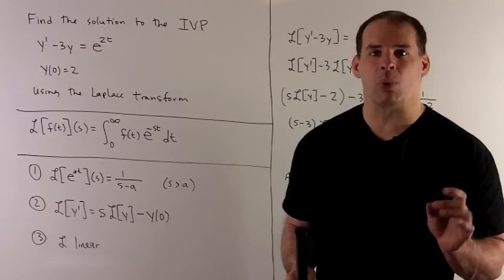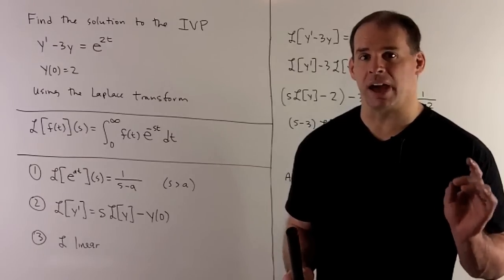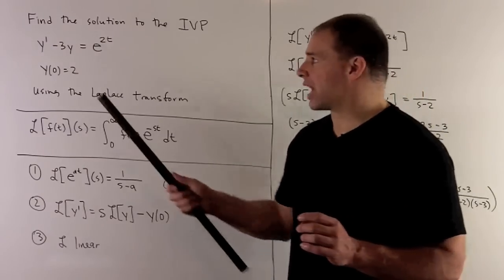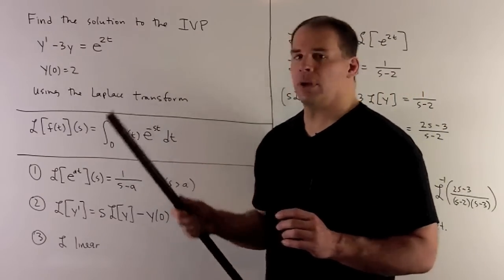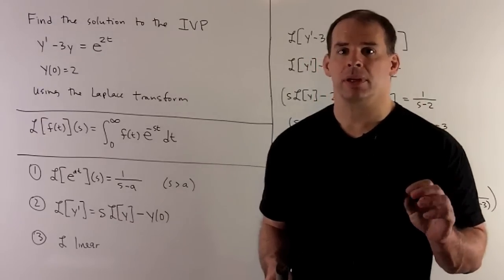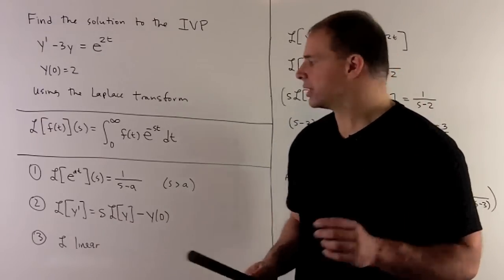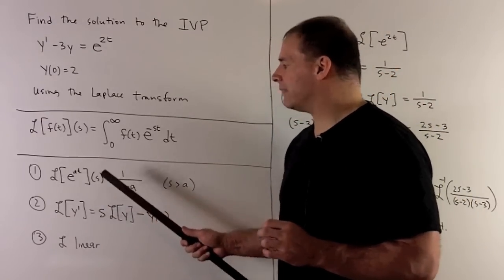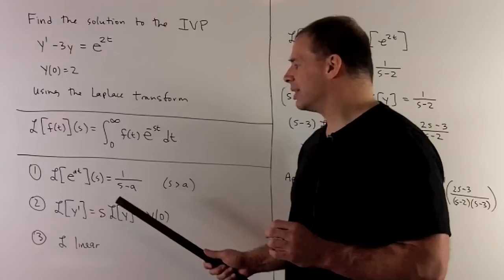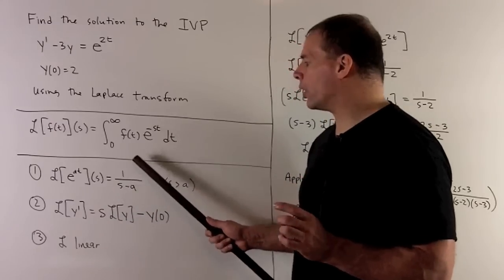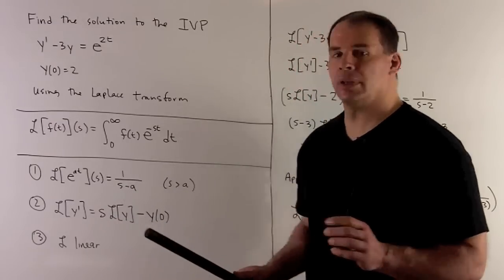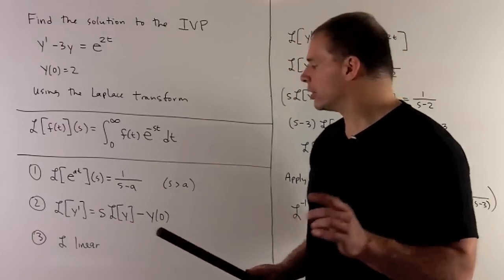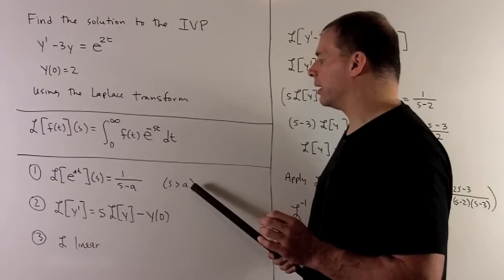We have to worry about whether our integral is defined or not. To solve our problem, we're going to need three properties. First, the Laplace transform of e to the at, evaluated at s, equals 1 over s minus a. For the integral to converge, we need s greater than a.